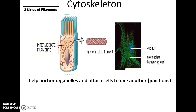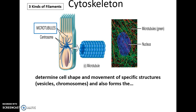Intermediate filaments are a little larger, made from various kinds of proteins, and help to anchor organelles in place and attach cells to other cells. Microtubules are the largest filaments, made from tubulin proteins. They help determine cell shape, act as a highway for movement inside the cell, and can move chromosomes during cell division.